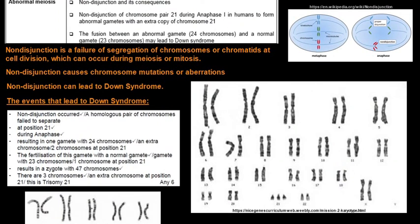Moving on to abnormal meiosis: this gives rise to the process of non-disjunction and its consequences. Non-disjunction is a failure of segregation or separation of chromosomes or chromatids at cell division, which can occur during meiosis or mitosis.